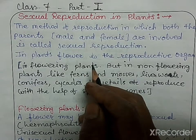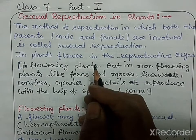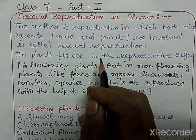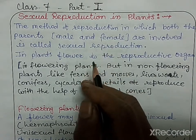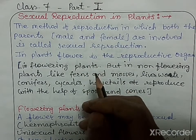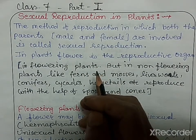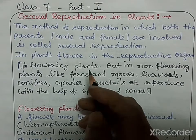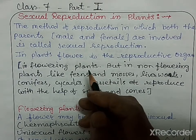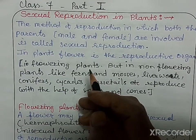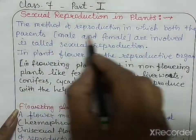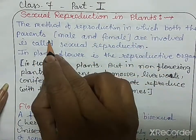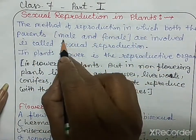This topic will be discussed in two parts. This is the first part, in which we will discuss the structure of a flower. First, let's see the definition: the method of reproduction in which both parents — male and female — are involved is called sexual reproduction.